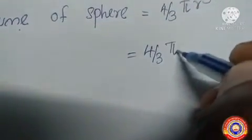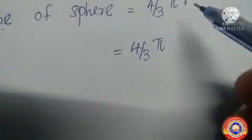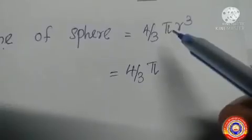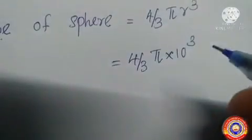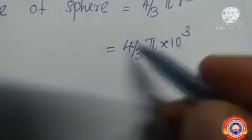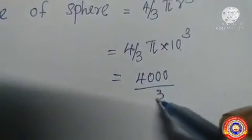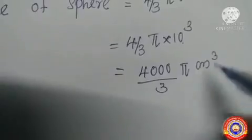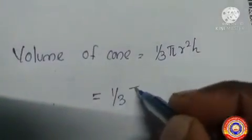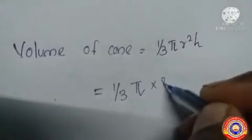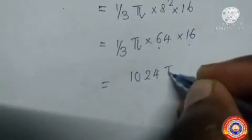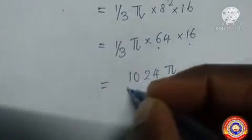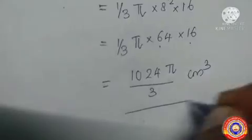The volume of the sphere is equal to (4/3)πr³, which is equal to (4/3)π × 10³, giving 4000π/3 cm³. Next, the volume of the cone is (1/3)π × 8² × 16, which equals (1/3)π × 64 × 16, giving 1024π/3 cm³.